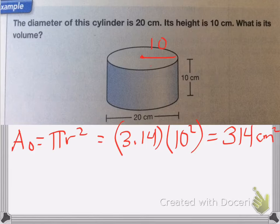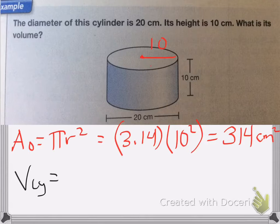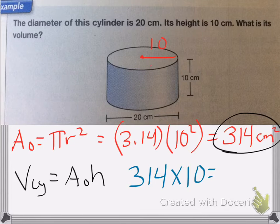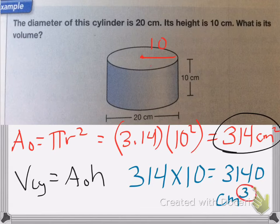I'm going to take that 314 centimeters squared and multiply it by my height, because the volume of a cylinder is equal to the area of the circle times the height. So 314 times 10 is equal to 3,140 centimeters cubed. Remember, with volume we always cube the label.